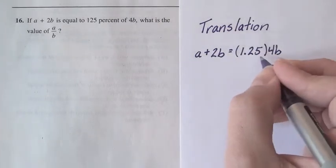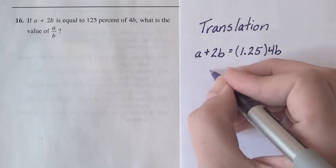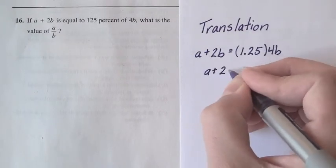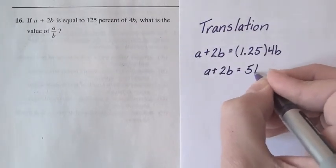All right, let's multiply 1.25 times 4. Let me rewrite this side. So we'll end up with 5b.